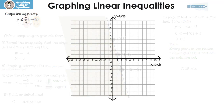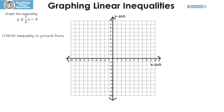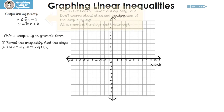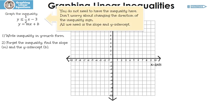I would like you to try this one. You're going to graph the inequality, so pause the video, graph it, and then press play to check. Alright, let's see how you did. The first thing is we need to write the inequality in the form y equals mx plus b — we're pretty lucky because it's already in that form. Now we need to decide what the slope is and what the y-intercept is, so I write y equals mx plus b underneath it. Remember, we don't have to worry about the inequality at this point.